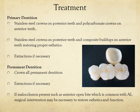In extreme situations, extractions may be indicated for primary dentition. For permanent dentition, crowning is recommended for all permanent teeth, with aesthetics being more of a consideration for anterior teeth. Extractions may also be necessary, and surgical correction if malocclusion is present.